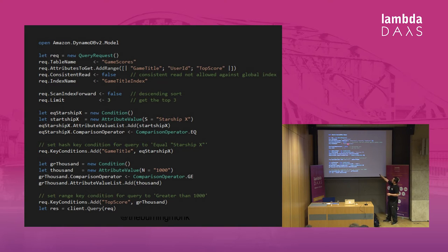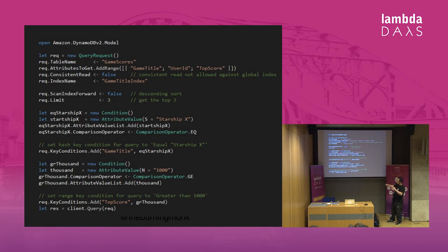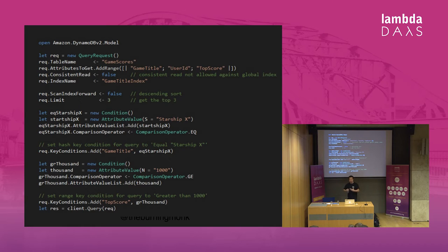I start by creating a query request object, set a few properties for table name and what index to use, and then to express my filters I have to create these condition objects and attach attribute value objects and so on. It's not a lot of code, but the thing is that my intention — the question I'm trying to ask — I don't have an abstraction that lets me express it sufficiently and easily so that someone coming into this code can easily understand what question I had in mind.